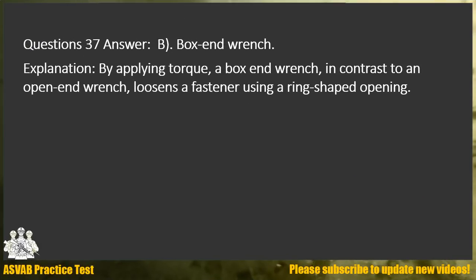Question 37. Answer B. Box end wrench. Explanation: By applying torque, a box end wrench, in contrast to an open end wrench, loosens a fastener using a ring-shaped opening.